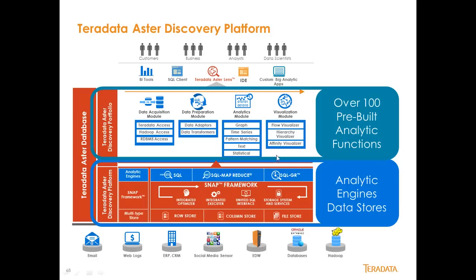There are visualization modules as well. Big data requires a different kind of client — a typical report is not going to be very valuable. We developed different types of visualizations: a flow visualization, or Sankey diagram, which shows the natural flow of people's behaviors through a system; a hierarchy visualizer, which is a tree hierarchy showing parent-child relationships between data objects; and an affinity visualizer, which is a sigma diagram showing nodes, edges, and the strengths of relationships between objects.